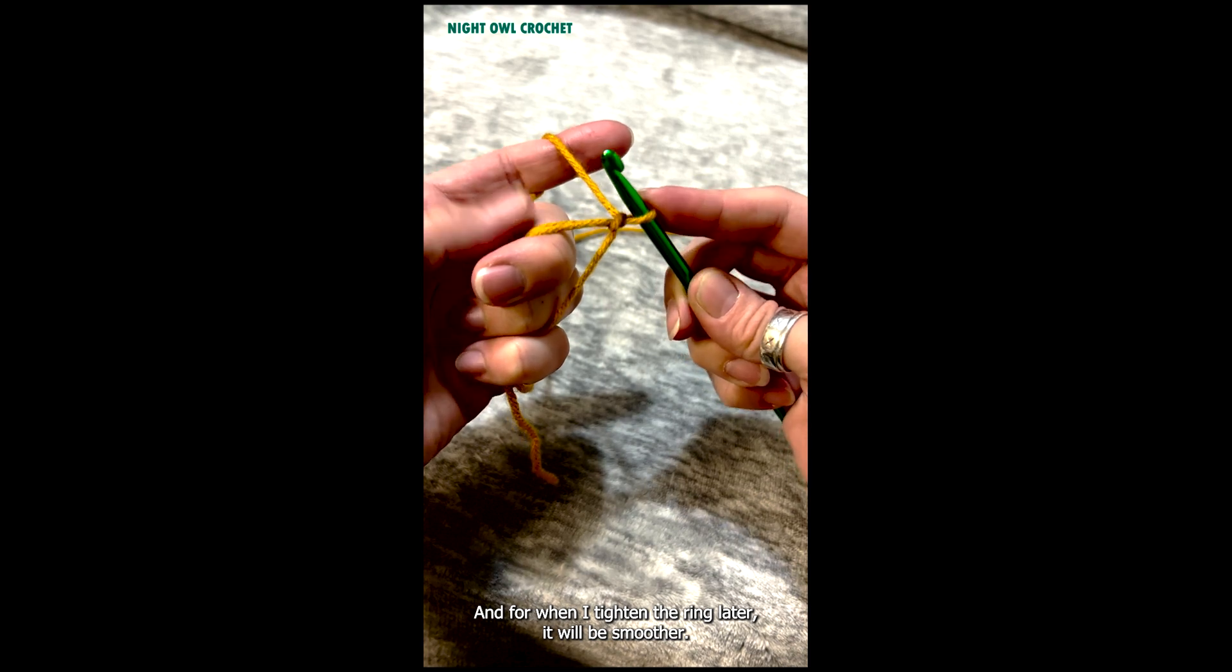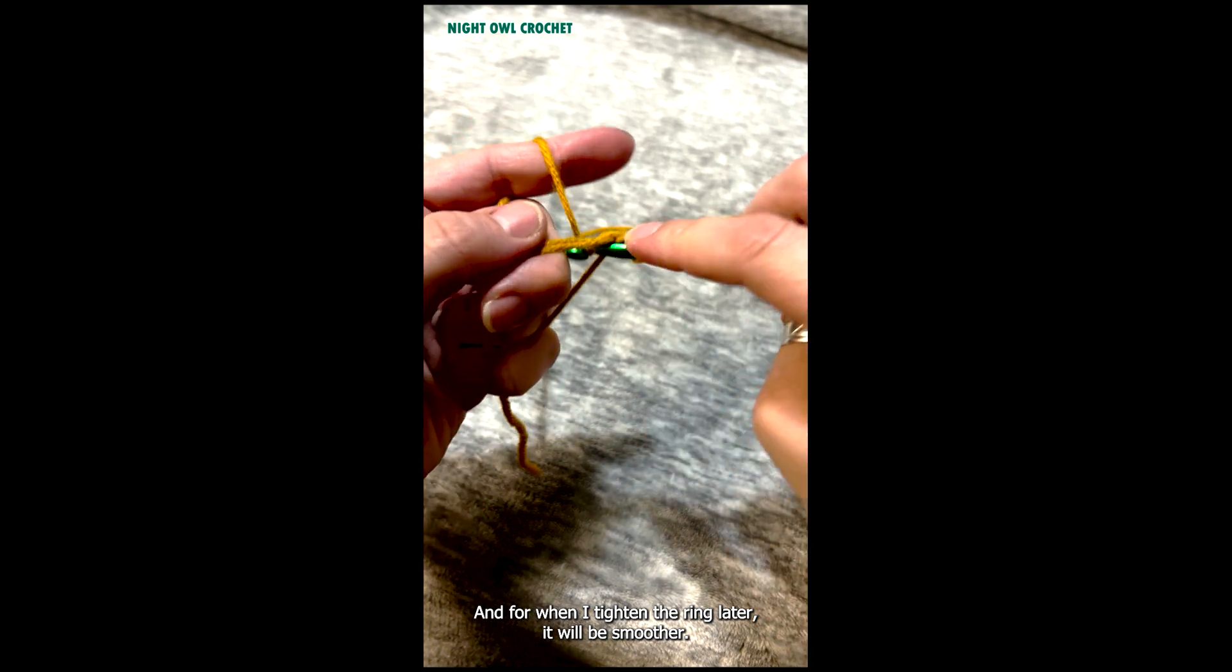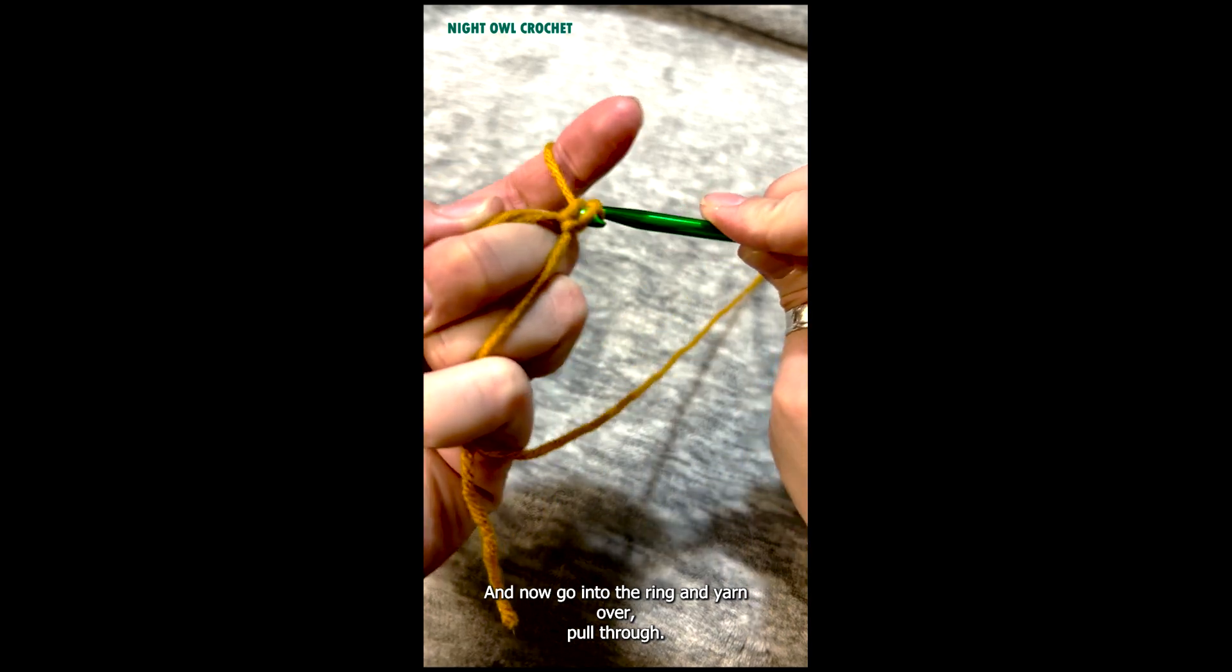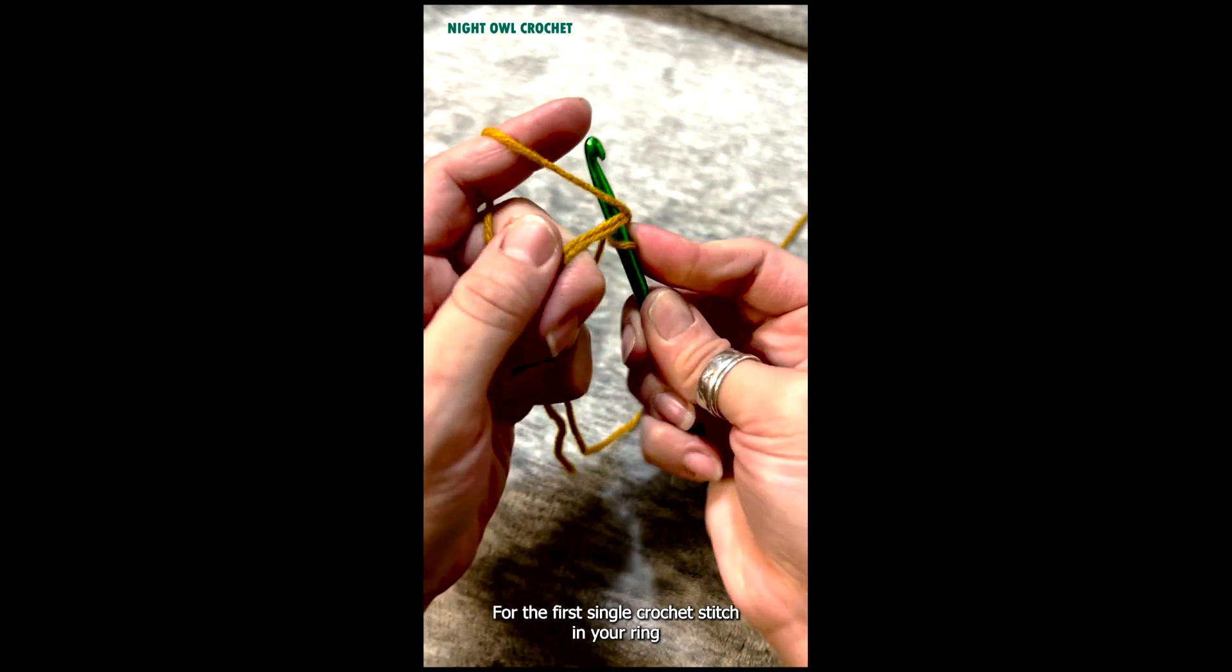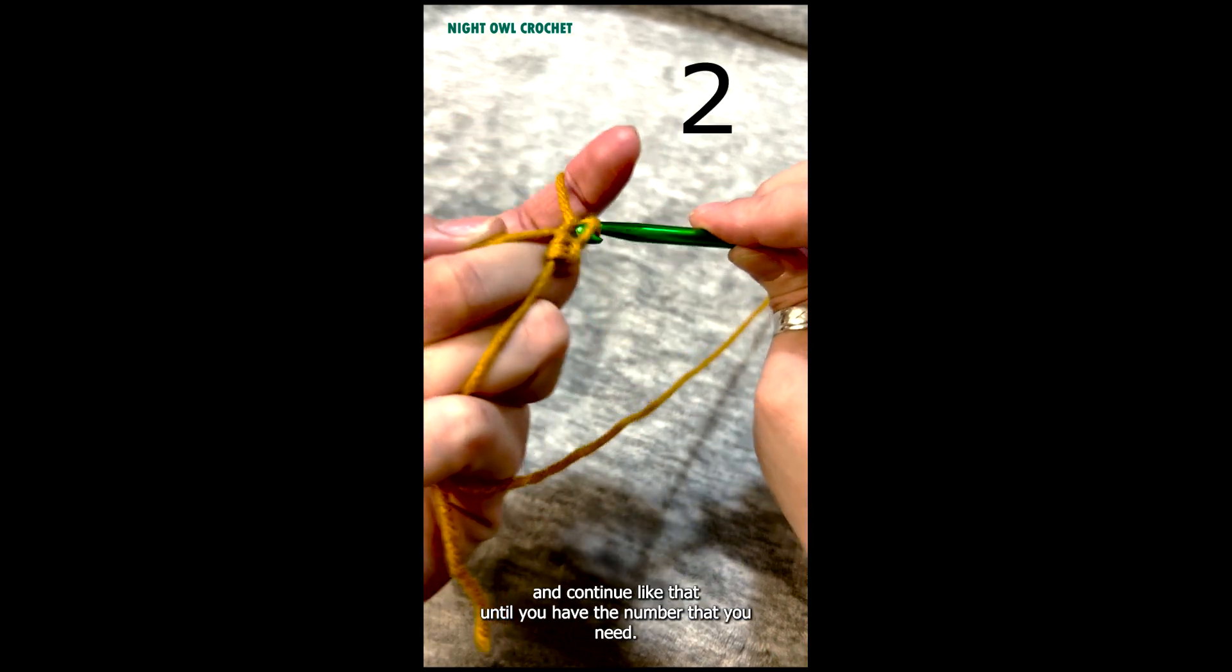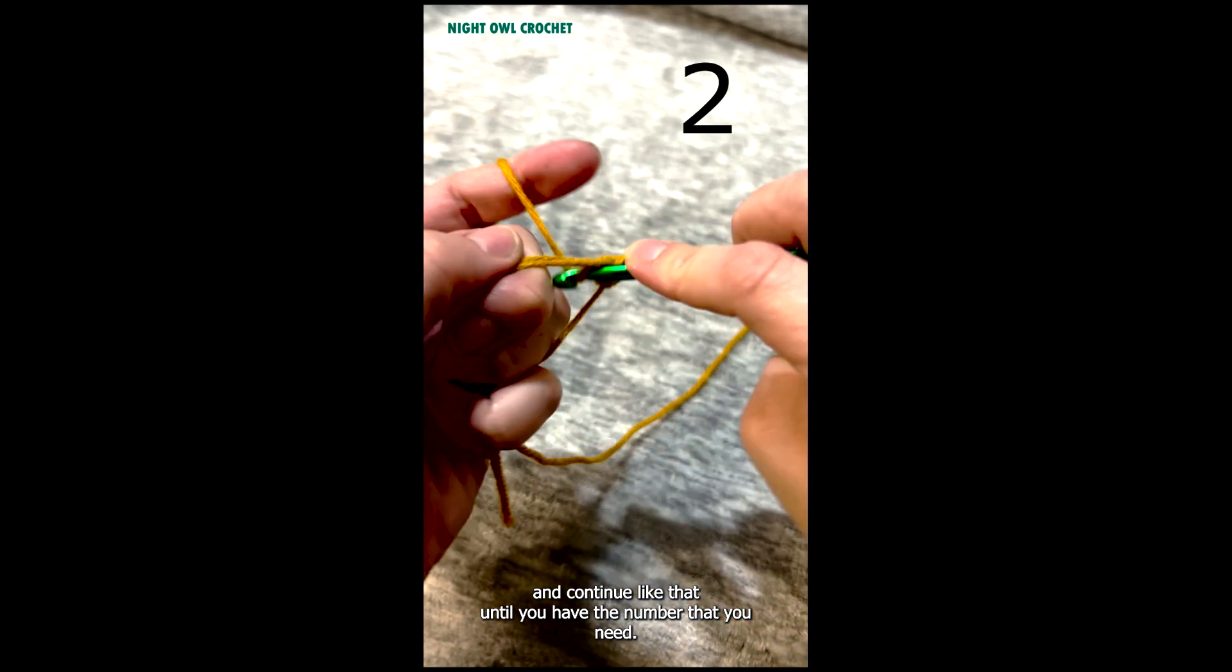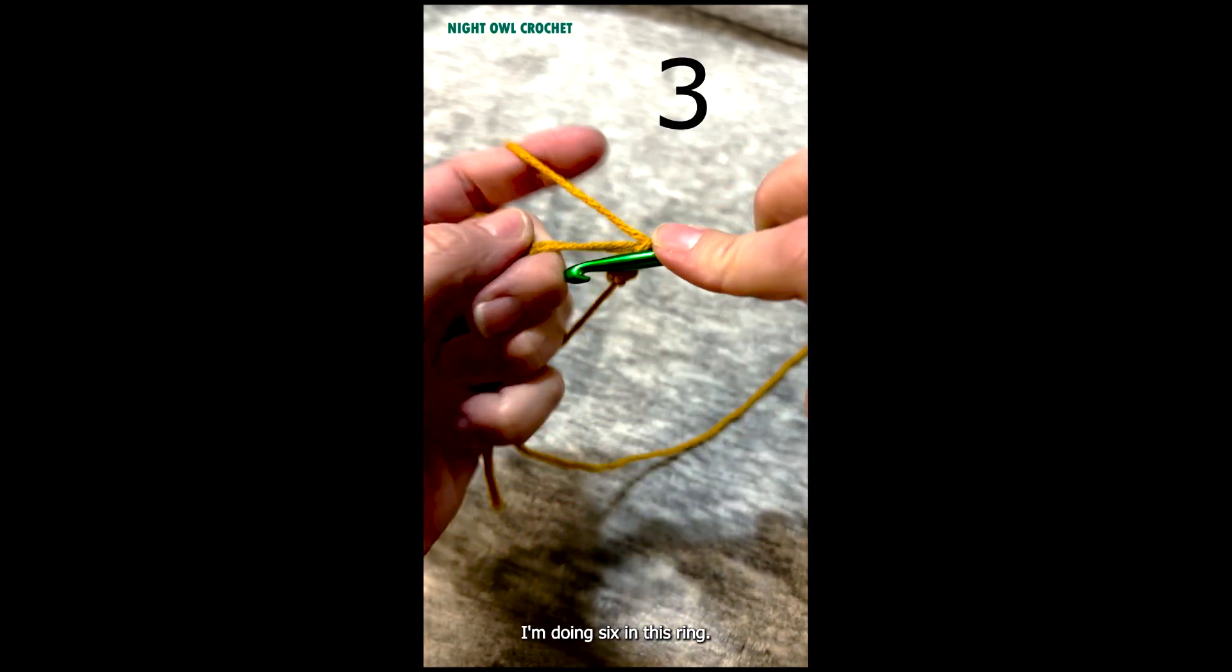And now go into the ring and yarn over, pull through for the first single crochet stitch in your ring. And continue like that until you have the number that you need. I'm doing six in this ring.